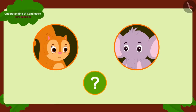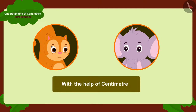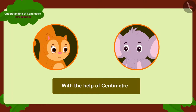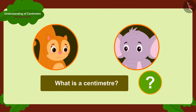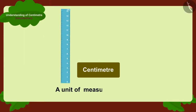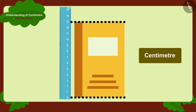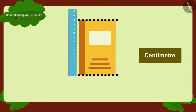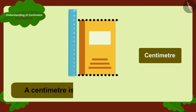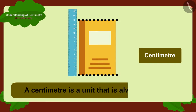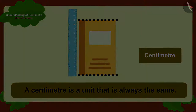Appu told Chanda that she can solve all these problems in a very easy way — with the help of centimetres. Chanda could not understand anything, so she immediately asked Appu, what is a centimetre? A centimetre is a unit of measuring length. We can measure the length of any object in centimetres, and a centimetre is a unit that is always the same.